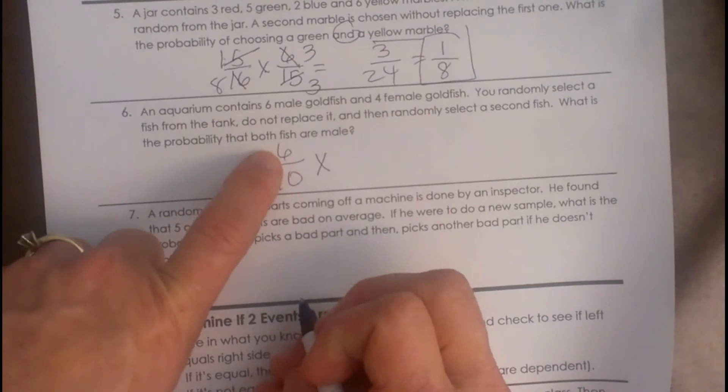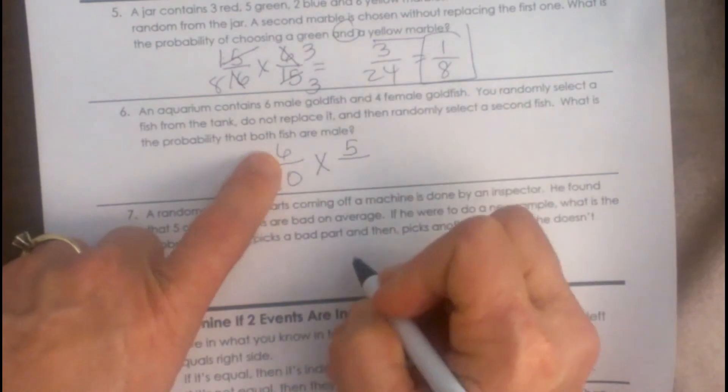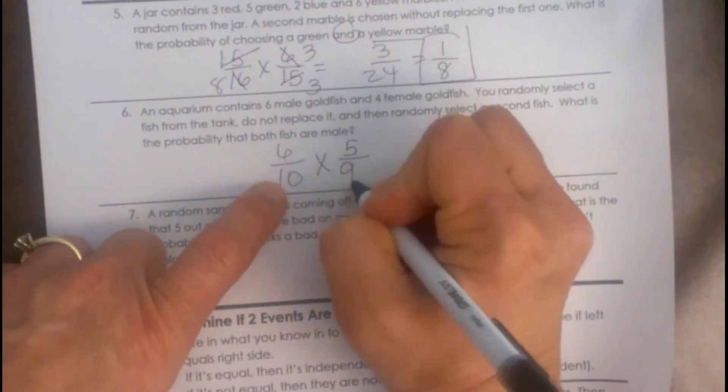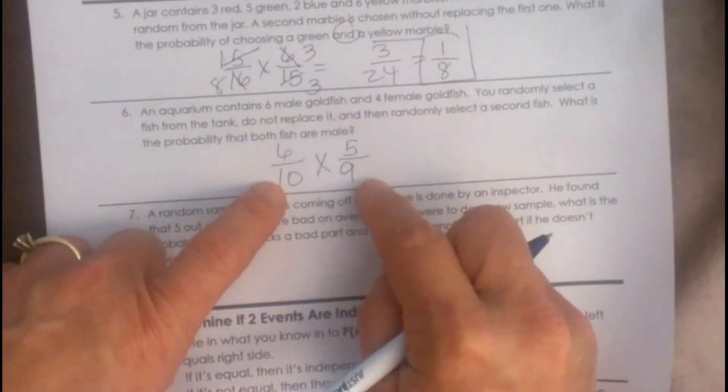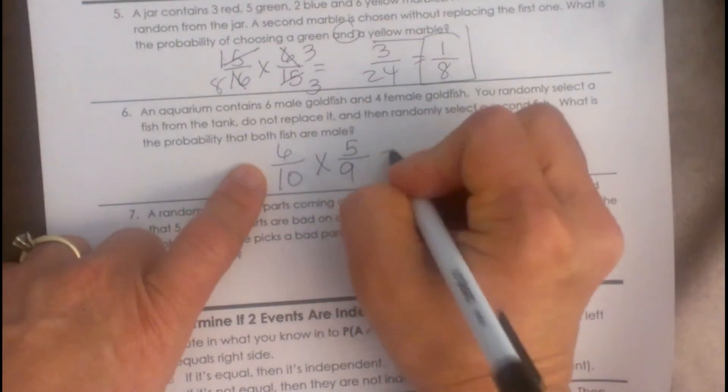So now we don't have 6 males anymore do we? We only have 5 males to choose from and we also only have 9 fish to choose from. So it is 5 ninths is our second probability. So now let's reduce these and then multiply them.